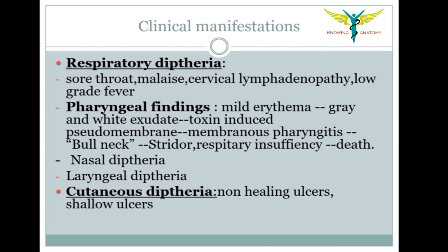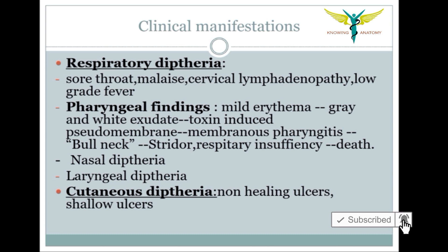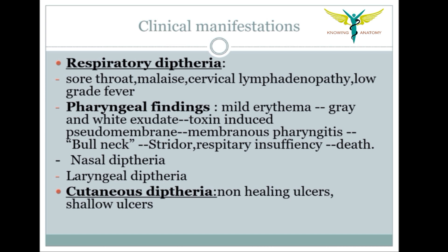Coming to the clinical manifestations, respiratory diphtheria presents with sore throat, malaise, cervical lymphadenopathy, and low-grade fever. Pharyngeal findings include mild erythema, gray and white toxin-induced exudate, and a pseudo-membrane — the main clinical sign — known as membranous pharyngitis. A bull neck appearance with stridor and respiratory insufficiency can lead to death.